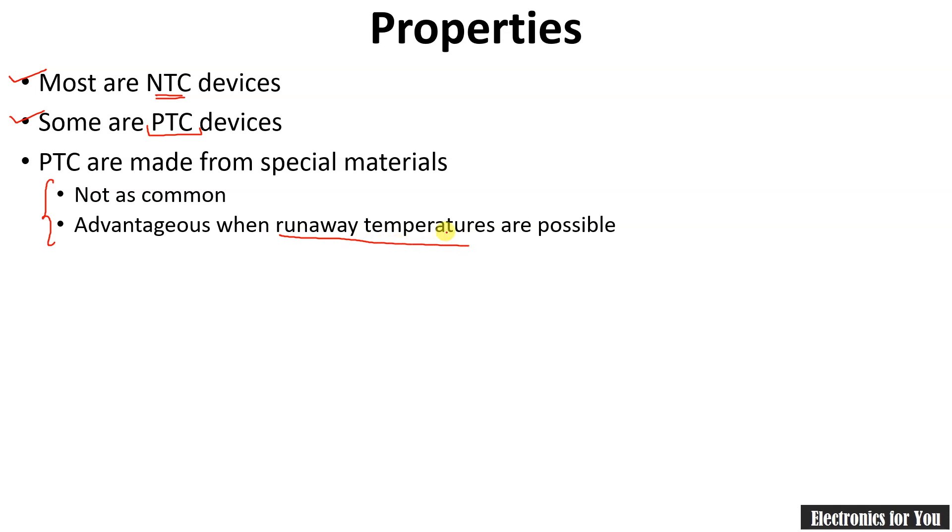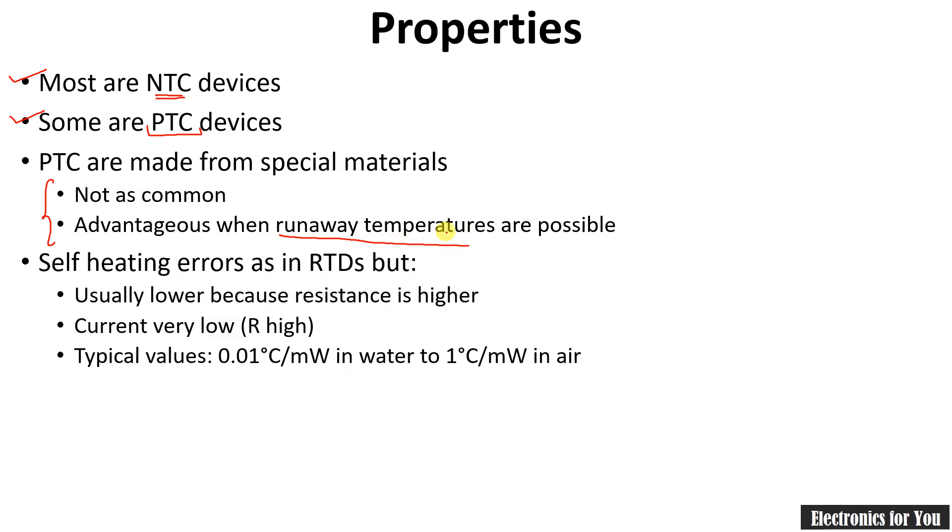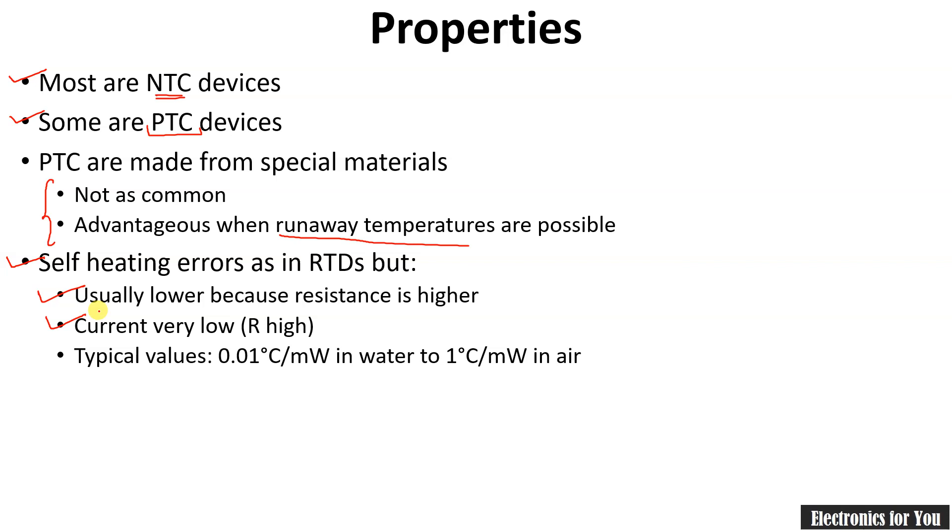Self-heating errors occur in thermistors, which is a disadvantage, and it can be minimized by using higher resistance values, generally in few megaohms. Current and temperature are kept low so that thermal self-heating can be avoided. The wide range, generally in few megaohms, can be used in self-heating mode to raise the temperature to a fixed value as the reference temperature in measuring flow.